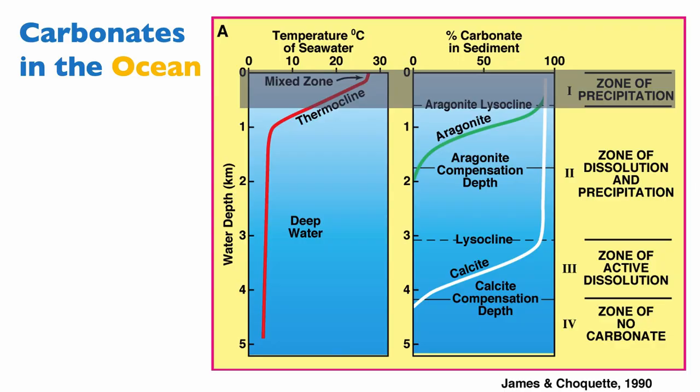If you were on an atoll that was then sinking — a drowned carbonate platform — the story could be different. As you can see from the diagram, your atoll could go through different zones where dissolution would become possible after a certain depth in your basin. But that's mostly not the case.